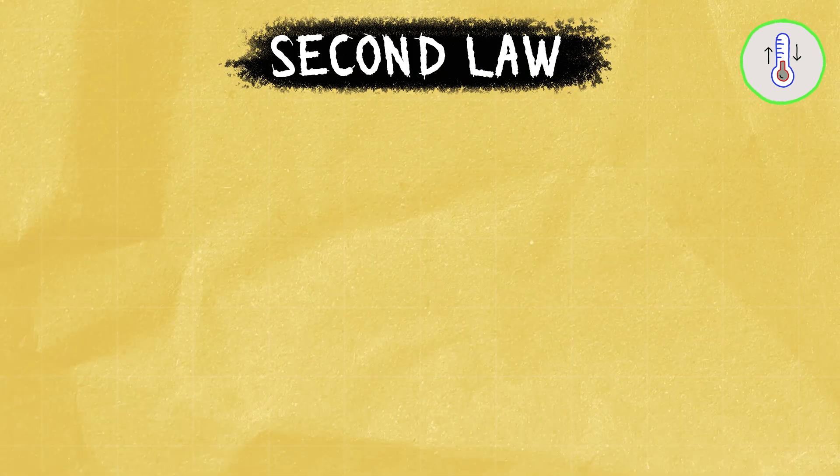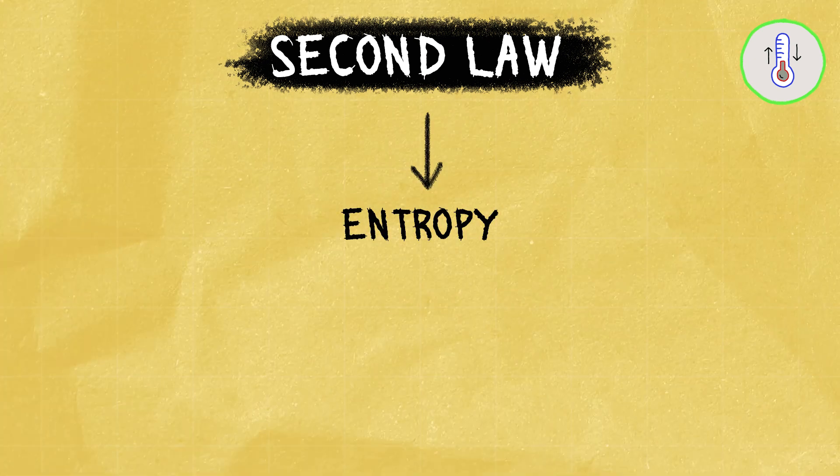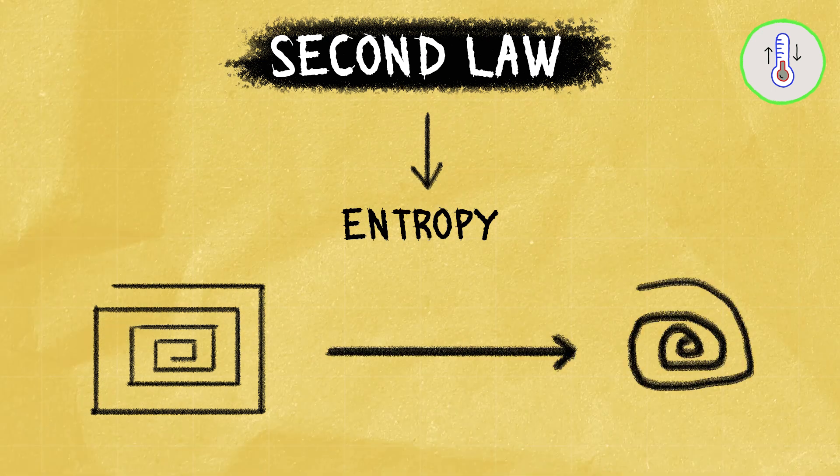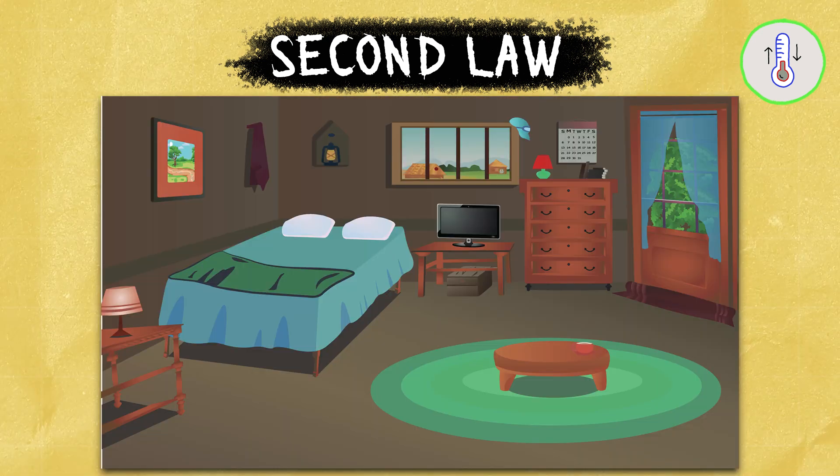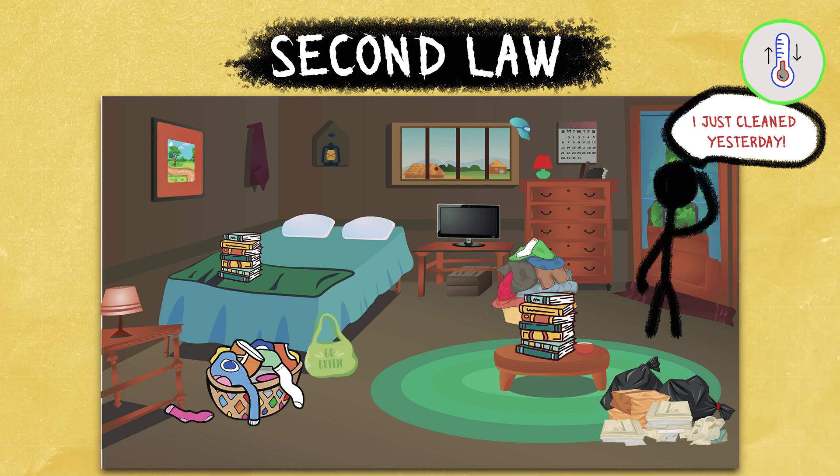The second law is a bit trickier. It talks about entropy, which is the measure of disorder in a system. Basically, things tend to go from order to disorder over time. Imagine a clean and tidy room slowly turning messy over time. That's entropy in action.